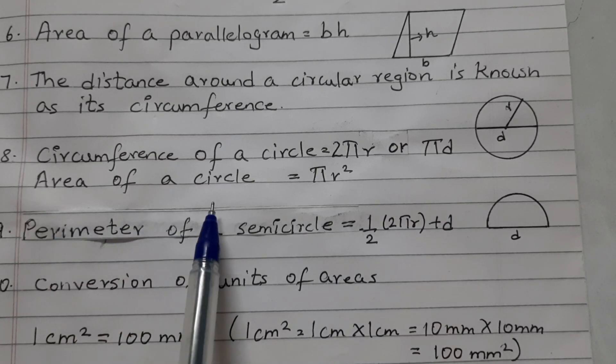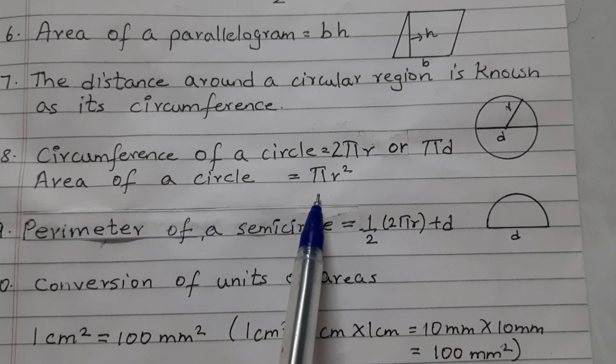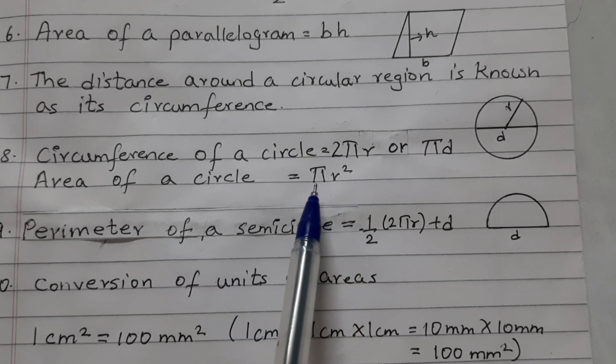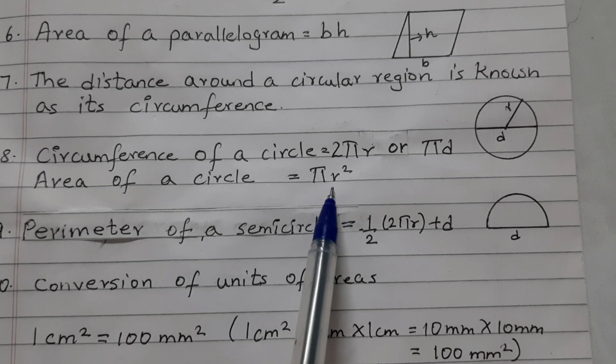Area of a circle is equal to pi R squared. Again, the value of pi is 22 by 7 or 3.14 and R is the radius.